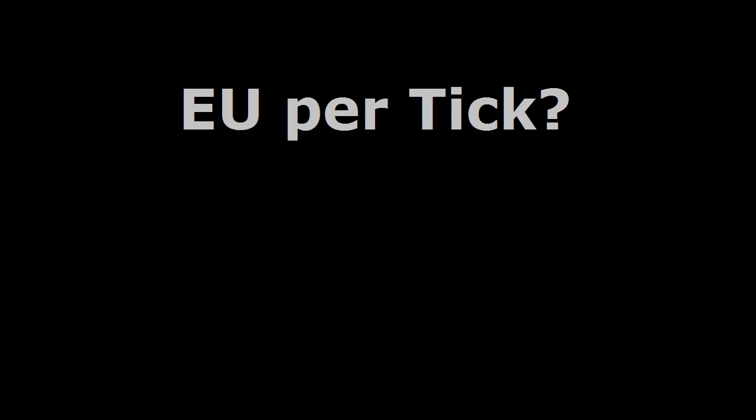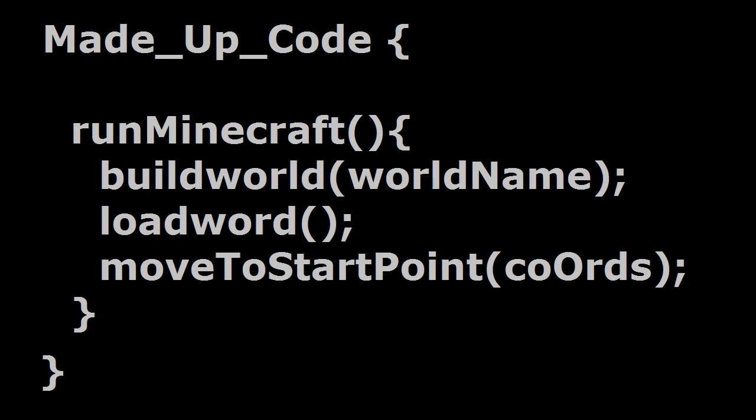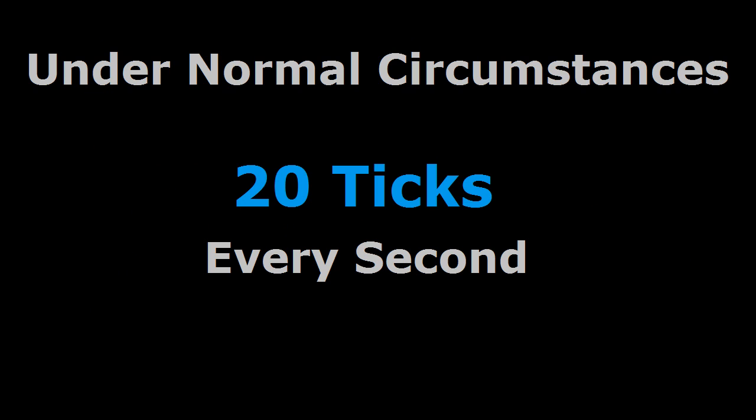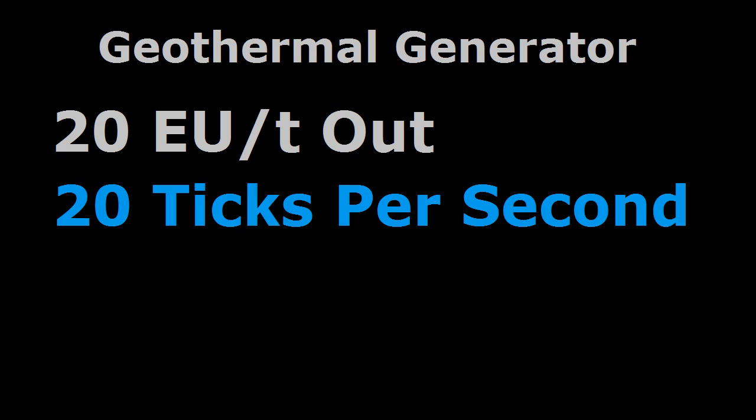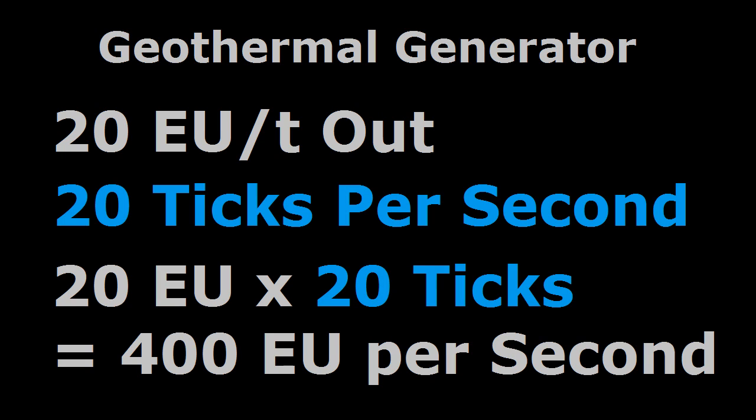A common question is: why is it per tick? What's a tick, and why isn't it per second or per minute? Well, that's really a programming question which ties into Minecraft's game code — I'll probably go into that in more detail in another video. But for now, all you need to know is that under normal circumstances, there are 20 ticks per real-life second. So going back to the geothermal generator, if it's producing 20 energy units per tick and there are 20 ticks per second, you can work out that 400 Industrial Craft energy units will be produced every second.